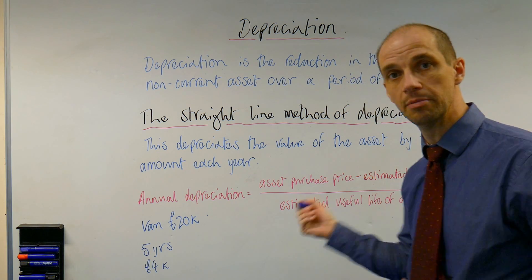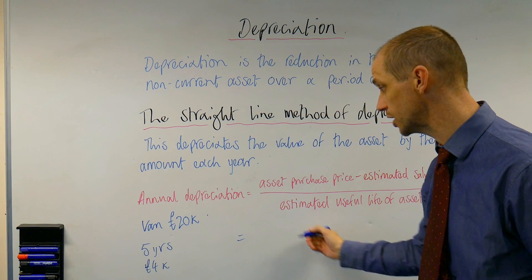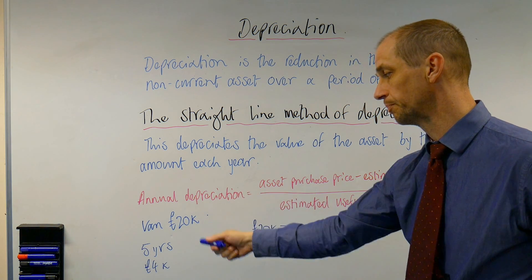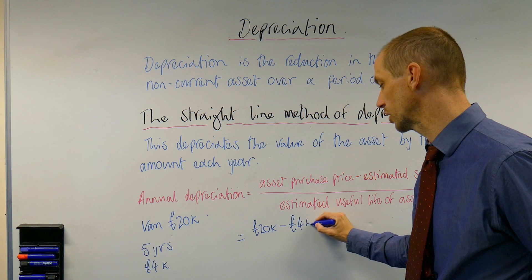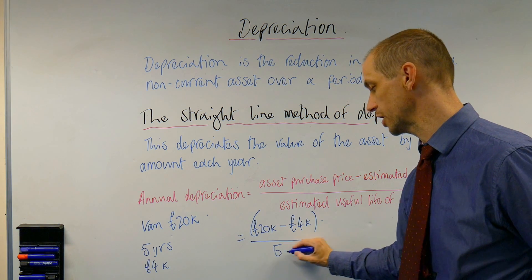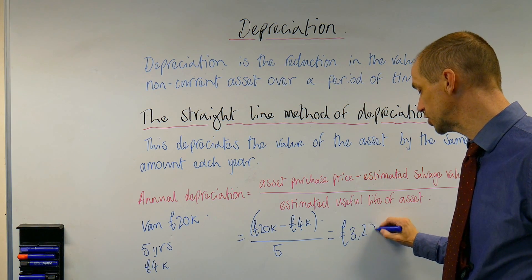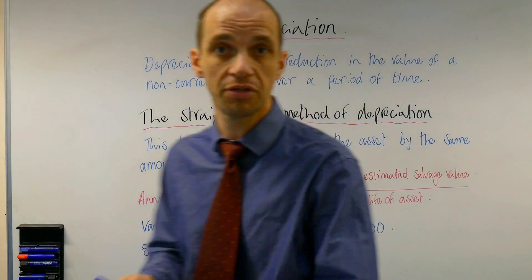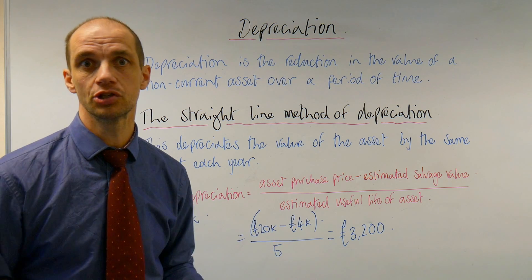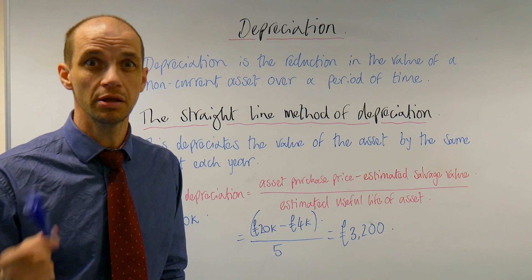So let's take this information and implement it into our calculation for the annual rate of straight line depreciation. We've got £20,000 minus that £4,000, leaving us with £16,000 on the top of the calculation, which then gets divided by five. As we divide that by five, we can see that we are depreciating the value of this asset at a rate of £3,200 per year. That is why it's a straight line method — because every year for those five years, it will be depreciated at £3,200.